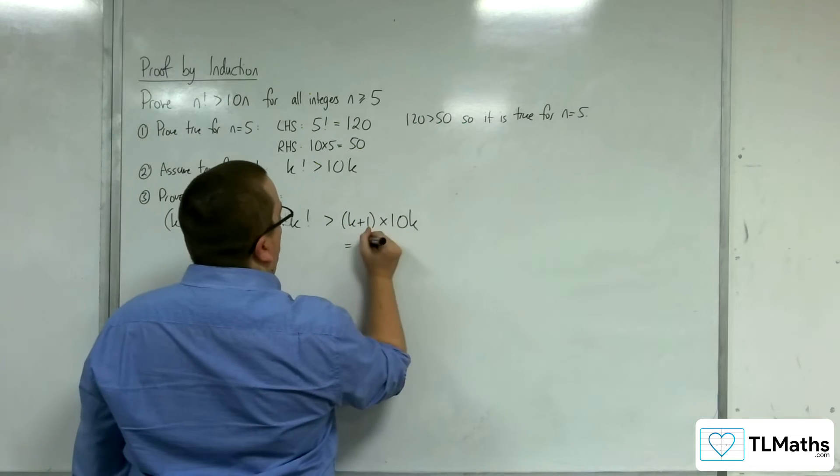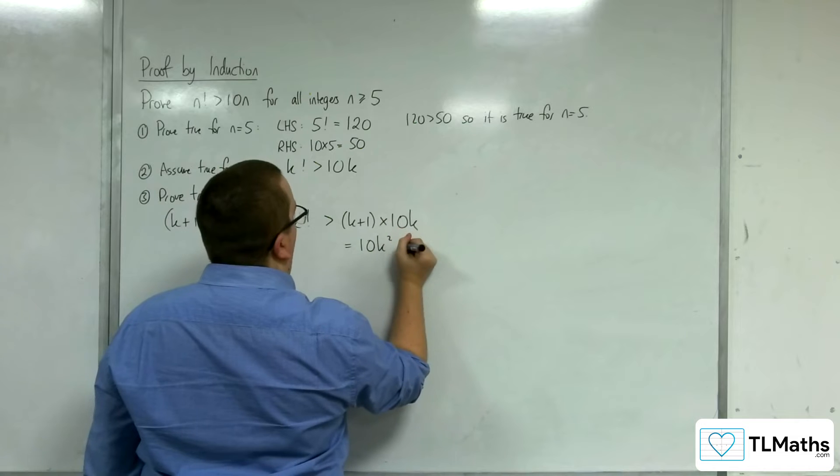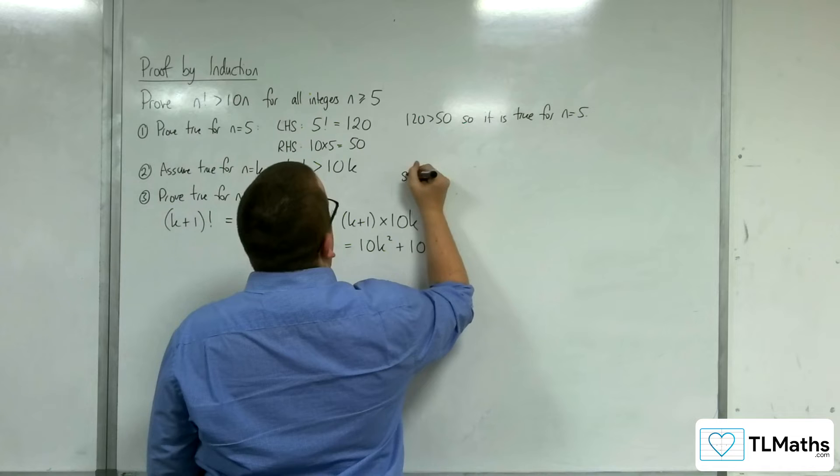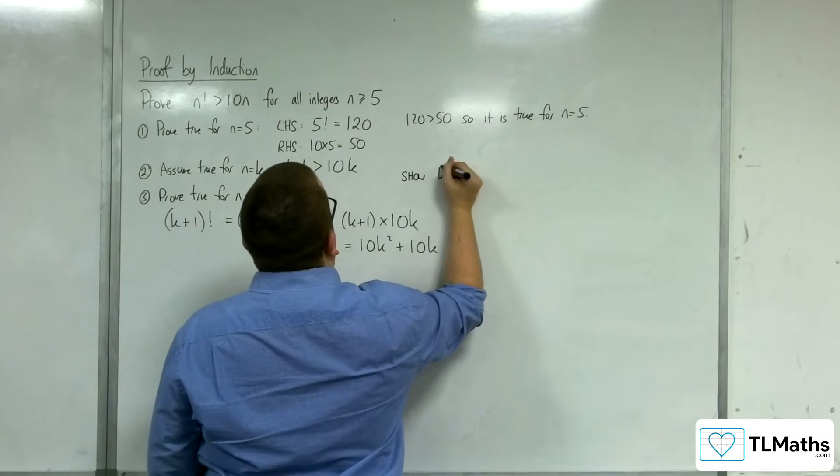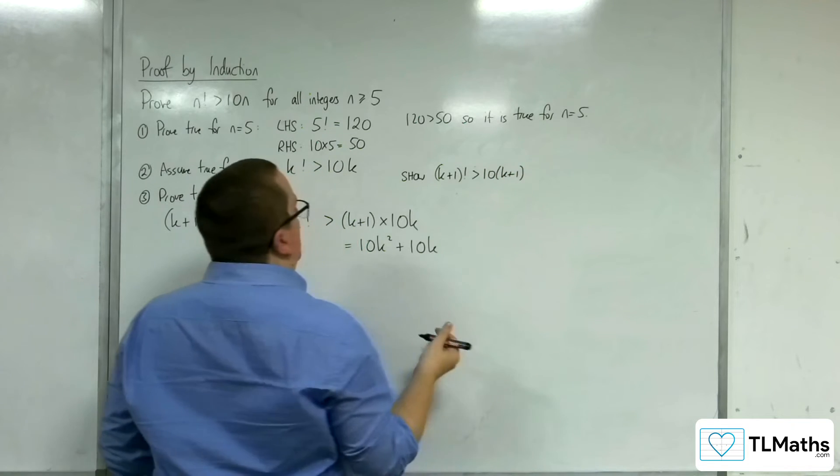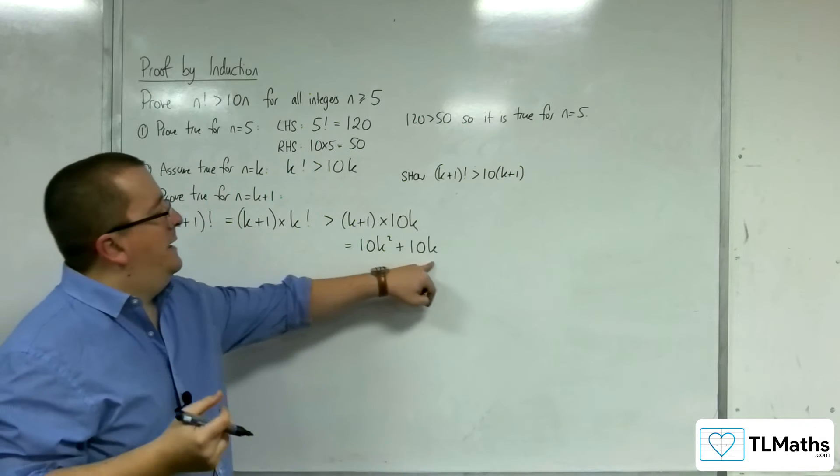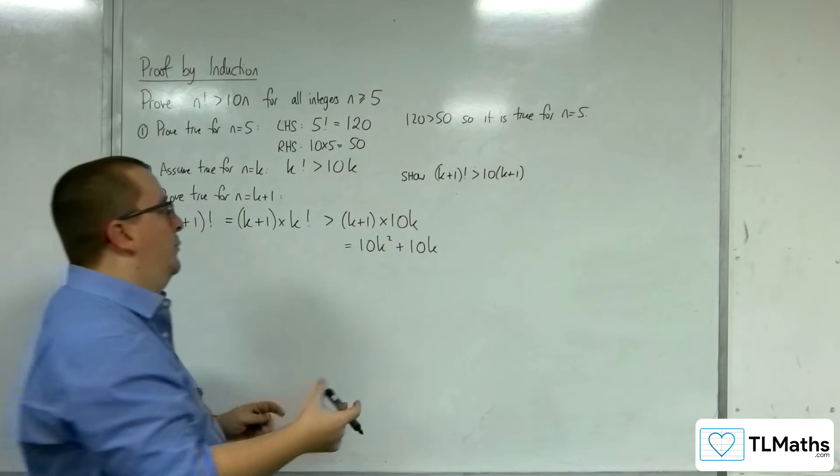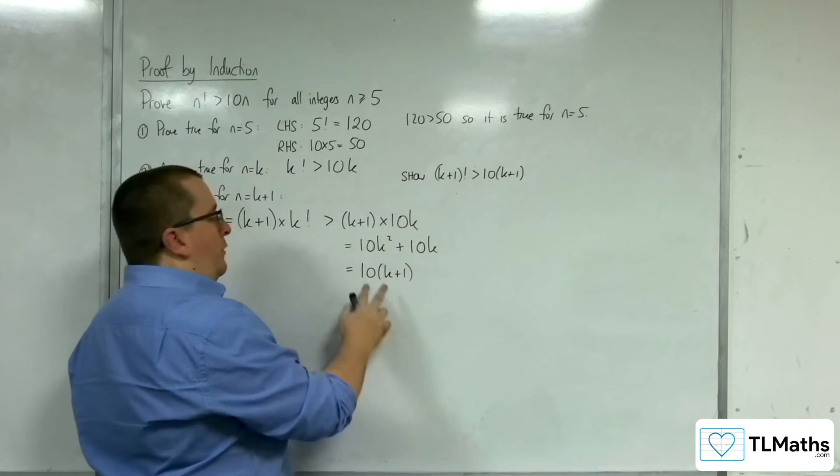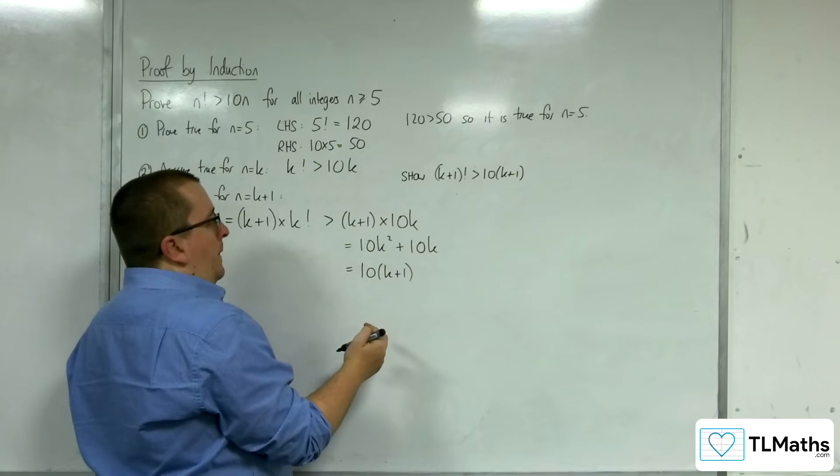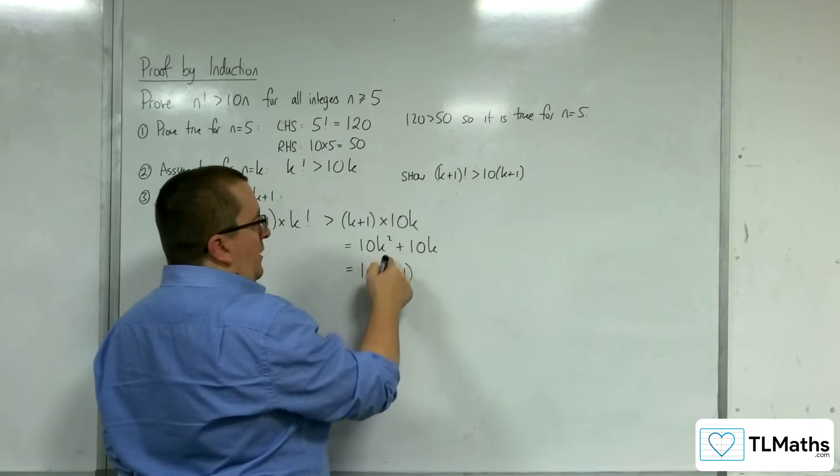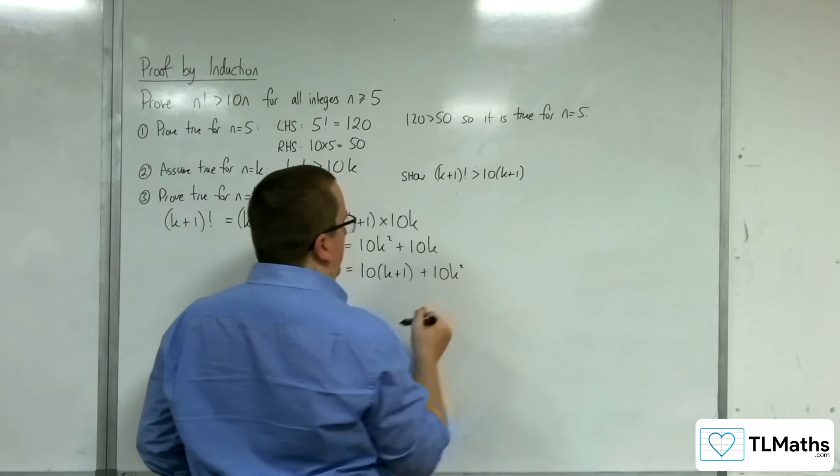So, expanding this out, we get 10k squared plus 10k. So, what I want to show, I want to show that k plus 1 factorial is greater than 10 lots of k plus 1. So, I want to write this with this 10 lots of k plus 1 involved. So, I've got this 10 lots of k plus 1. So, 10 lots of k and 10 lots of 1. But, I want these two lines to be the same. So, I'm going to have to have another 10k squared added on here.